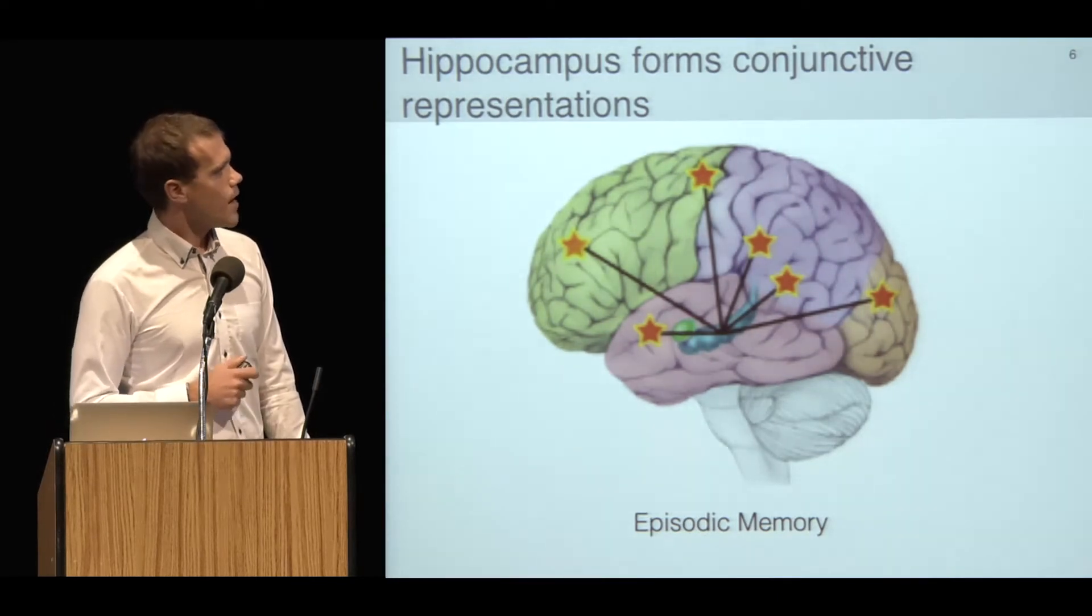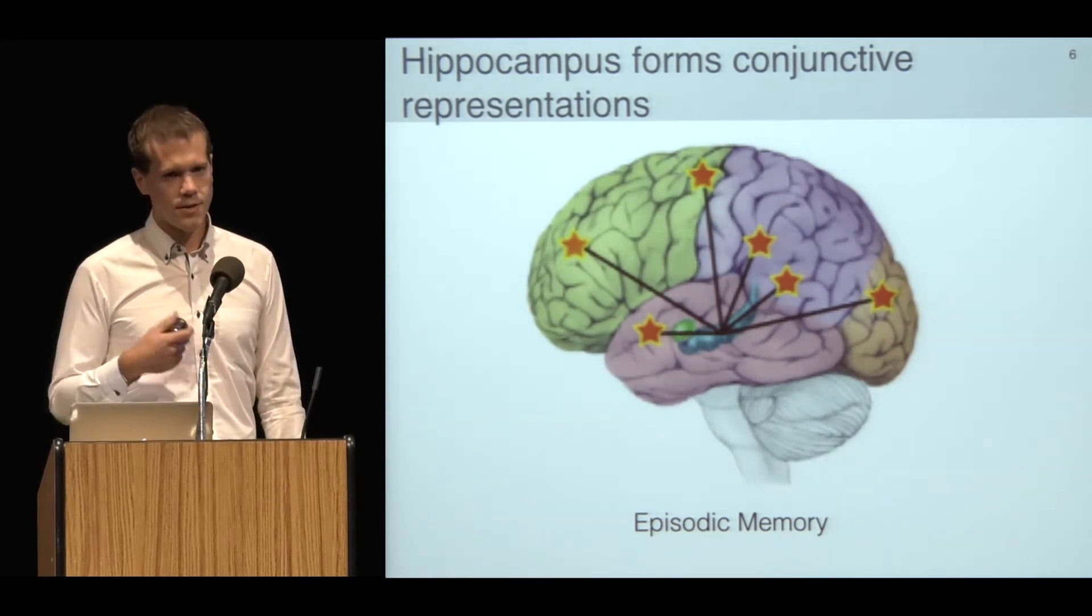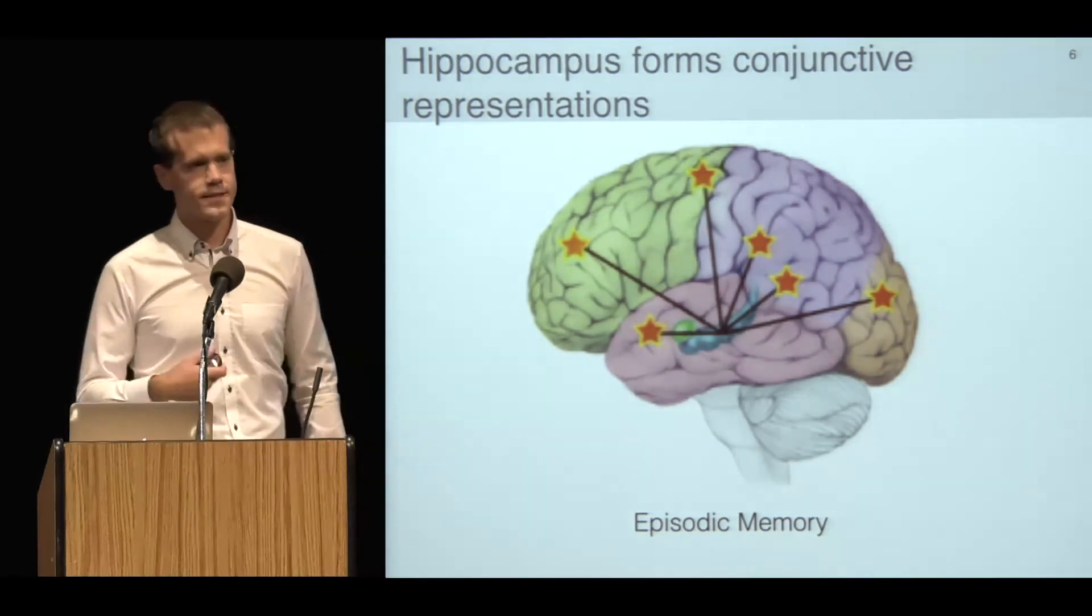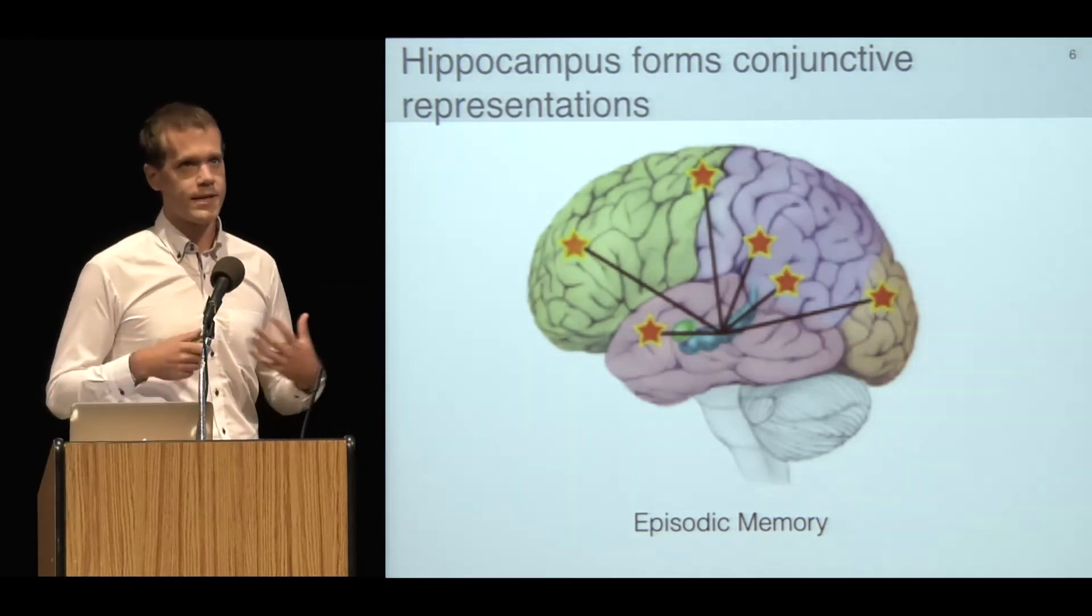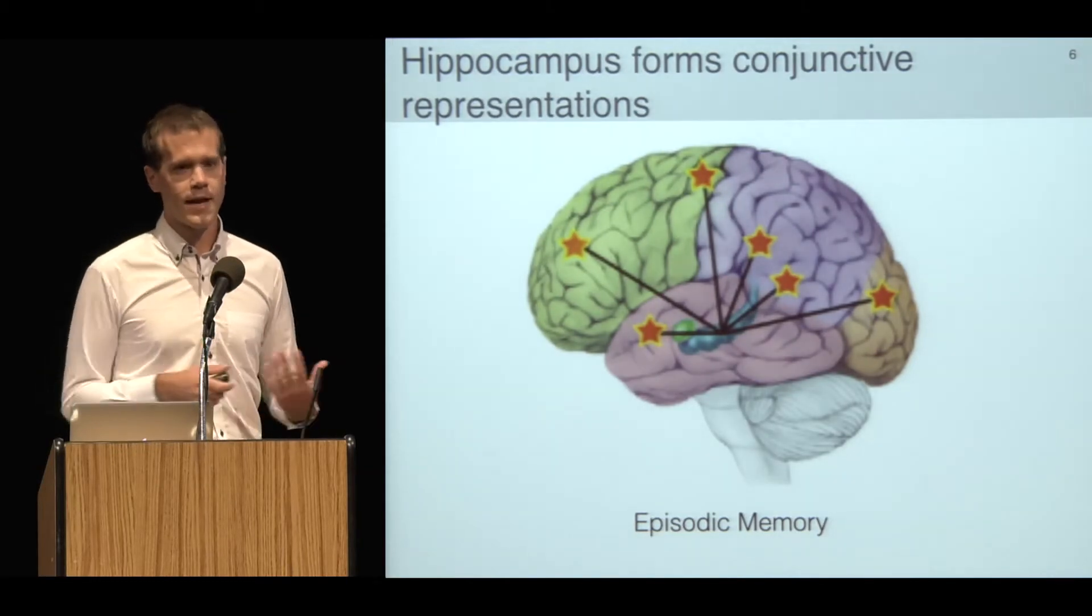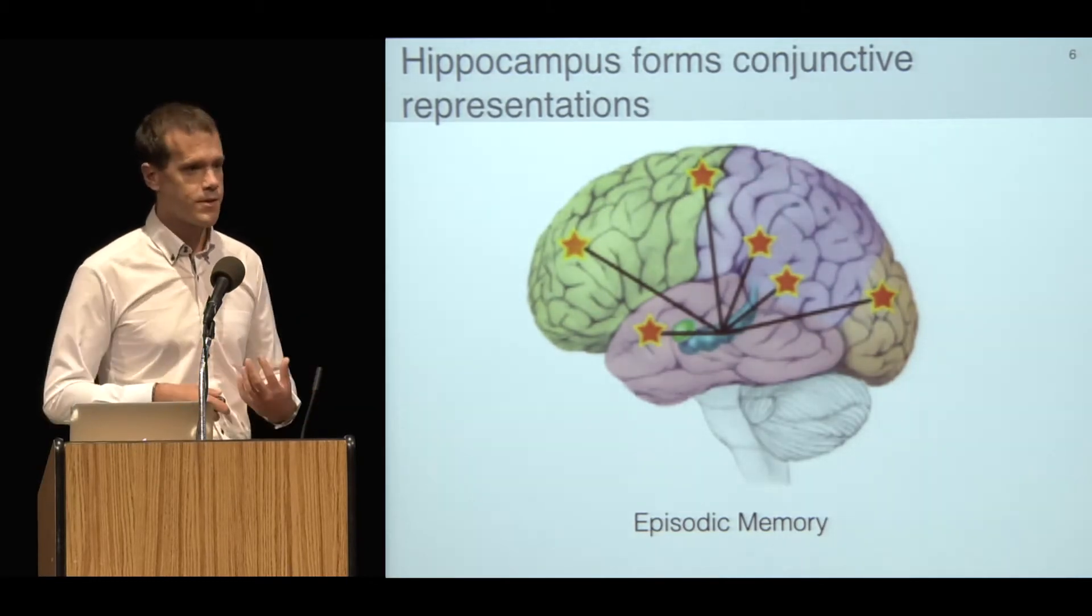It's this pattern separation of conjunctive representations that's thought to support rich episodic memories, so how you can keep separate all the different memories you might have with the same people in your childhood home, for instance.